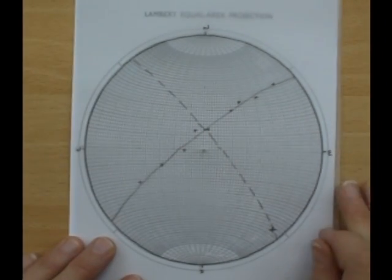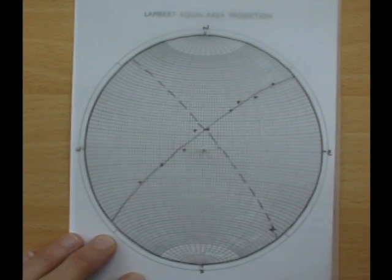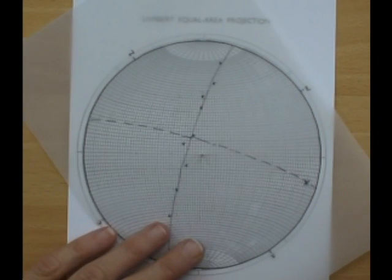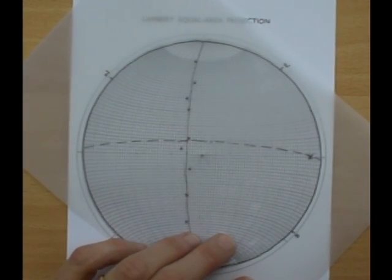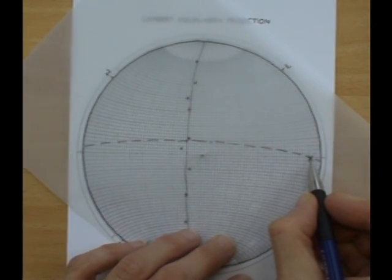So the next thing we can do is measure the plunge and azimuth of our fold axis. And we do this by taking the fold axis round to the equator and counting in for the plunge, so in this case 10 degrees.